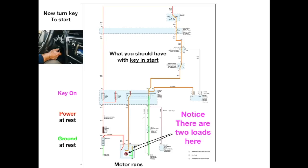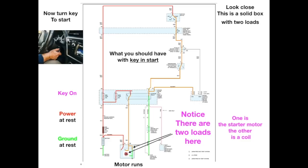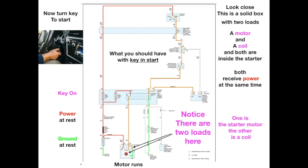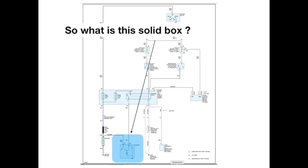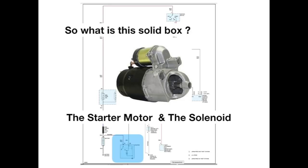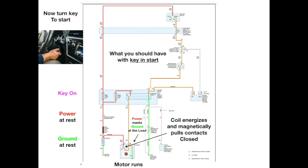Now notice there are two loads here — one is the starter motor and the other is a coil. This is a solid box with two loads in it: one is a motor and the other is a coil, and both are inside the starter. Both receive power at the same time. So this solid box is the starter motor and the solenoid all packaged together as one unit. The coil energizes and magnetically pulls the contacts closed, and when that happens the motor runs.